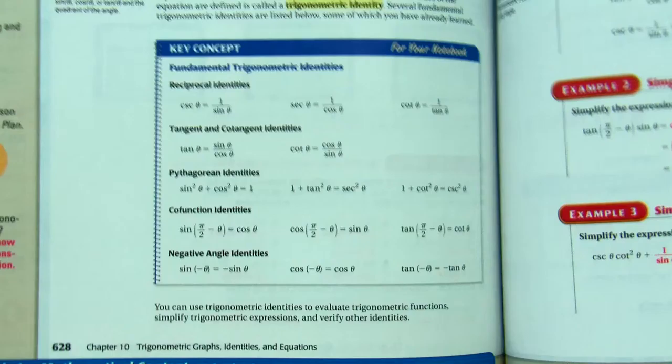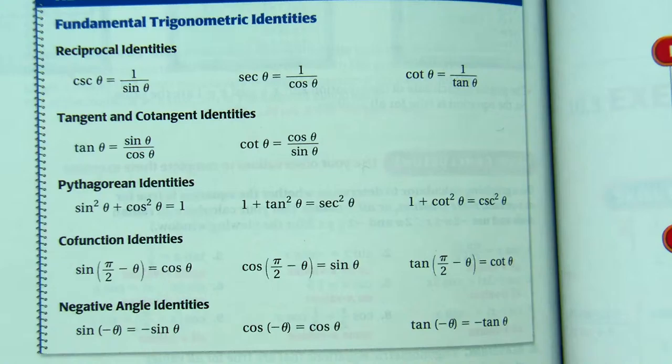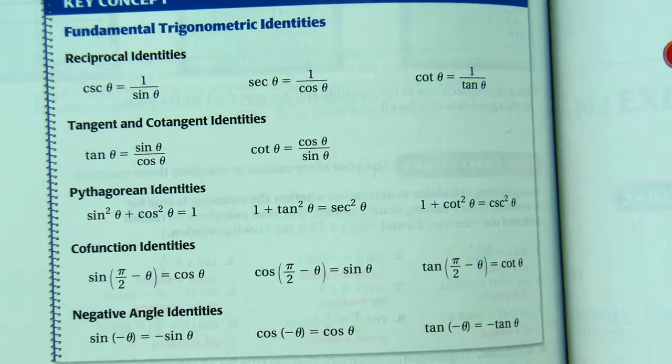Today we're going to be talking about section 10.3, Verifying Trigonometric Identities. To start us off, we need to take a look at page 628 in our book for this great list of all the formulas we'll need to know. There are a lot here, and you're going to need to have a lot of them memorized. I'll tell you which ones specifically in class.